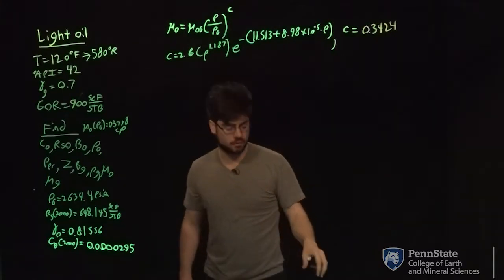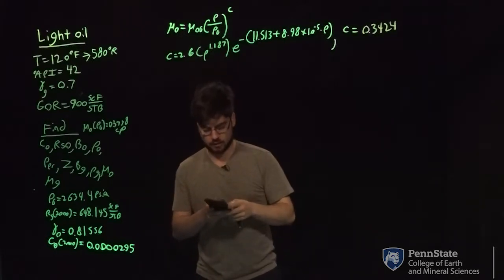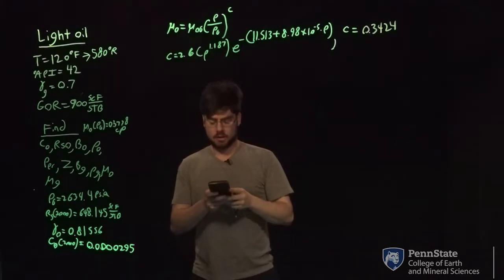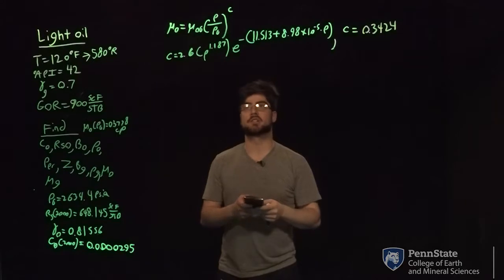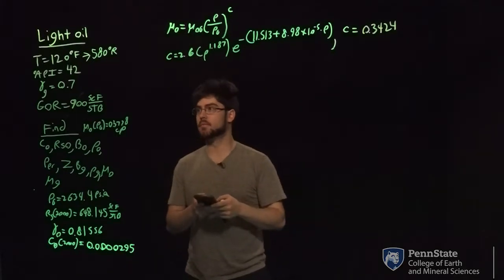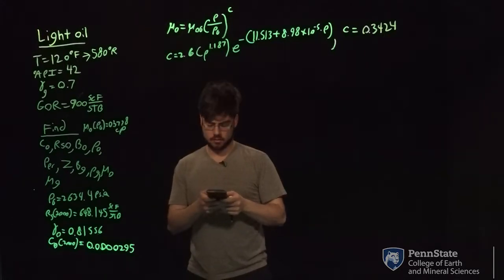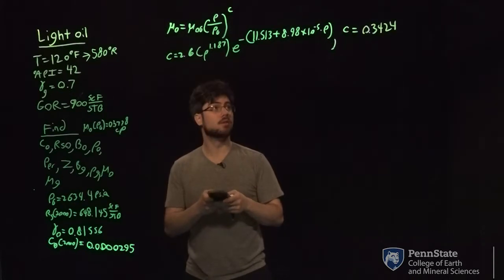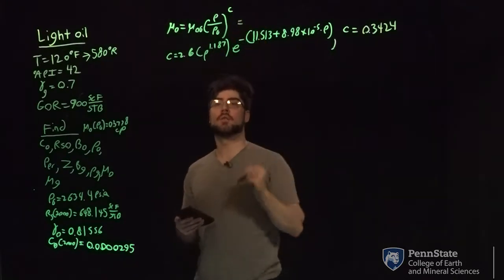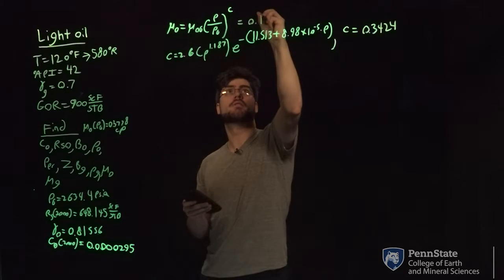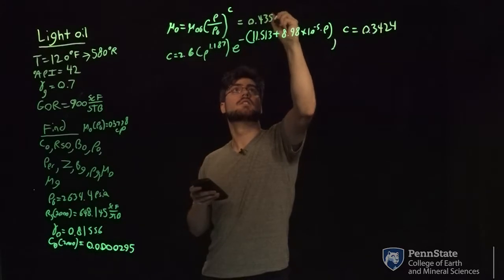Plugging c into the equation above and using the viscosity of oil at bubble point of 0.3778, with the pressure of interest at 4,000 psi divided by our bubble point pressure, we get that our viscosity of oil at 4,000 psi is equal to 0.4358 centipoise.